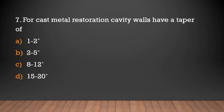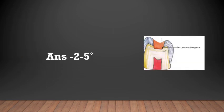For cast metal restoration, cavity walls should have a taper of: 1 to 2 degree, 2 to 5 degree, 8 to 12 degree, or 15 to 20 degree? The answer is 2 to 5 degree. For cast metal restoration, cavity walls should have a taper of 2 to 5 degrees.